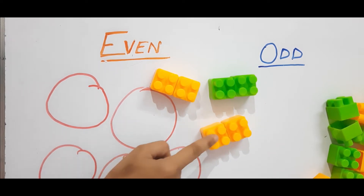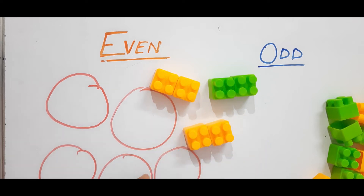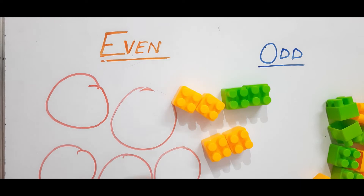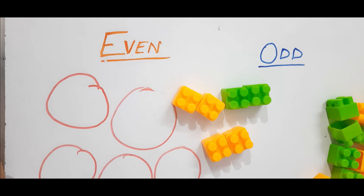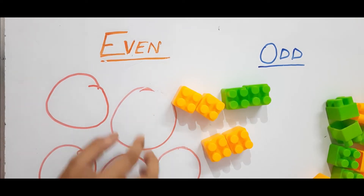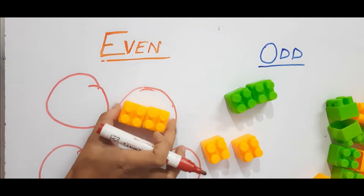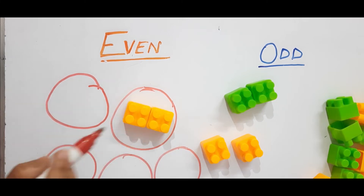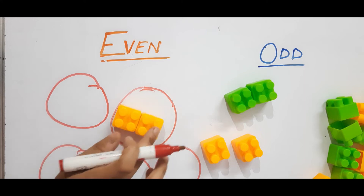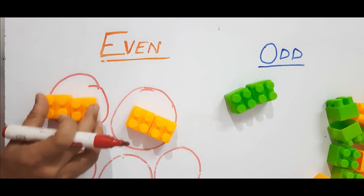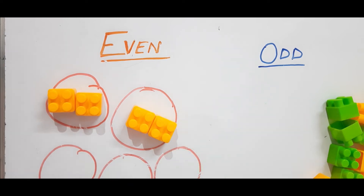Any two things joined together become one pair. Like in your body, you have one pair of hands — you have two hands, right? Can you give me one more example of a pair in your body? You have one pair of eyes — very good! So anything two is a pair. Now let's put these blocks into pairs. This is a pair in the ring — this block has a partner, this block also has a partner.